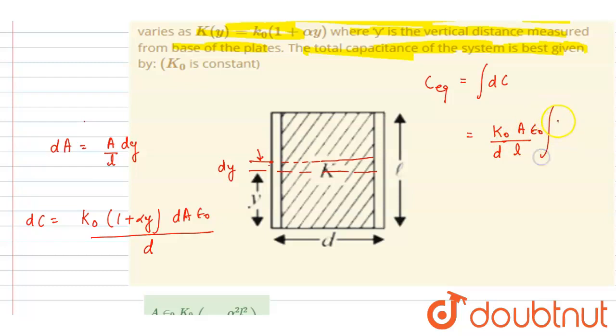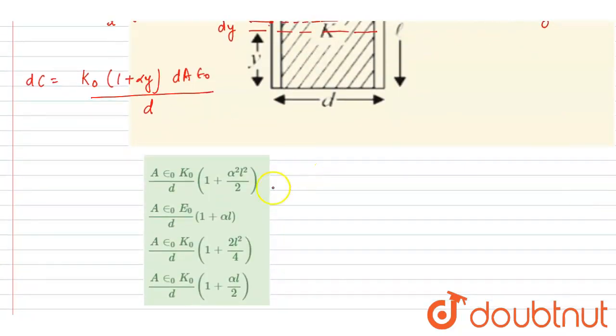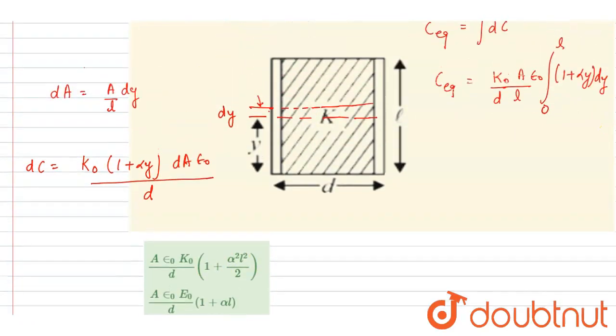and in integration you only have to write this K(y)dy from 0 to l. That will be the C_equivalent. So if you see the options are these, you can integrate it to get the correct option.